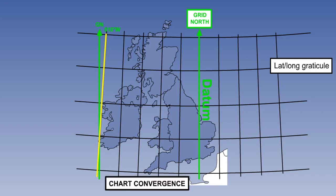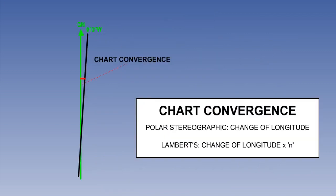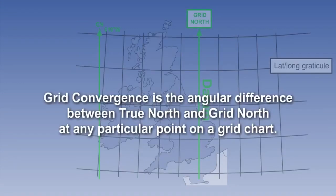A line of longitude defines local true north. Therefore, the difference between true north and grid north at any point on the chart is the amount of chart convergence between the longitude being considered and the datum. This is exactly the same chart convergence you learnt about in maps and charts. If the chart is a polar stereographic, the convergence will be the change of longitude. If it is a Lambert's, it will be the change of longitude times the sine of the parallel of origin, or little n. So this gives our definition. Grid convergence is the angular difference between true north and grid north at any particular point on a grid chart.